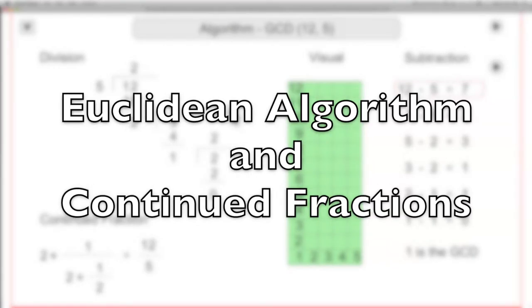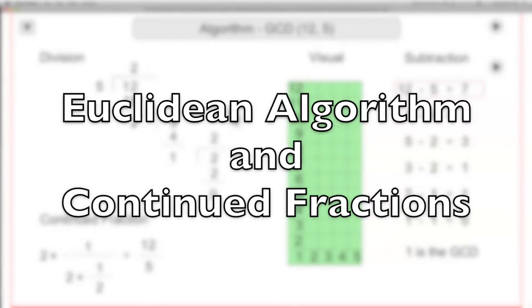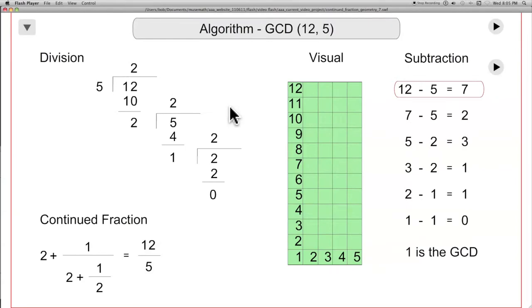The Euclidean Algorithm and Continued Fractions. For the Euclidean Algorithm, you've got a greatest common denominator. This is the normal way it's introduced at school these days.